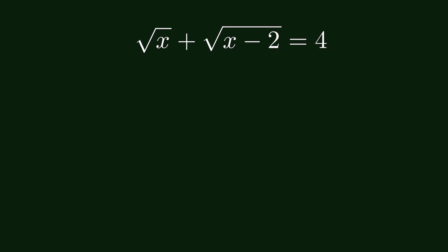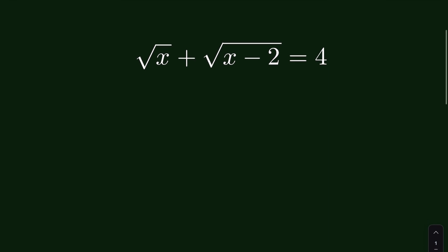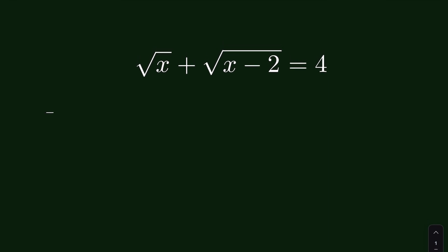Square root of x plus square root of x minus 2 is equal to 4. We have to find the value of x. We can solve it using two methods. Let's try Method 1.